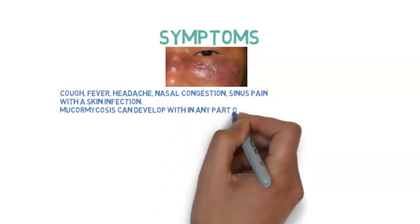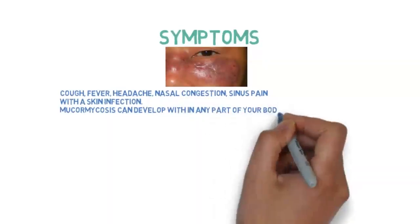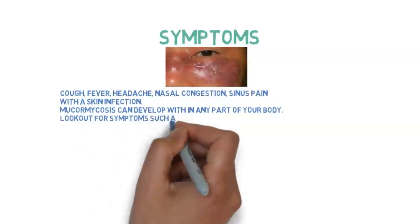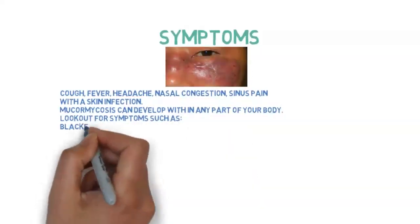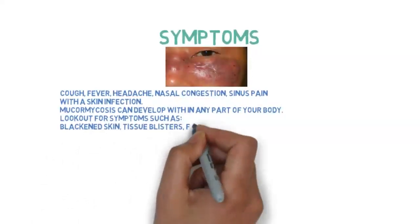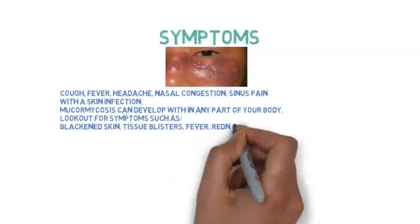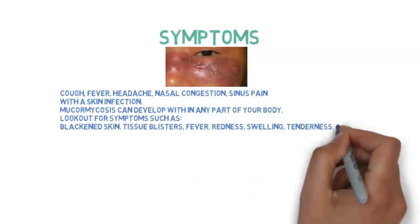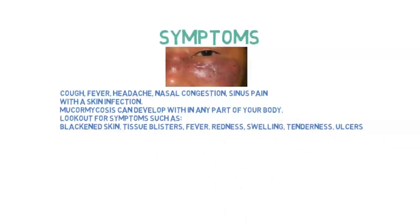With a skin infection, mucormycosis can develop within any part of your body. It may initially occur at the site of skin trauma, but it can quickly spread to another area. Be on the lookout for symptoms such as blackened skin, blisters, fever, redness, swelling, tenderness, and ulcers.